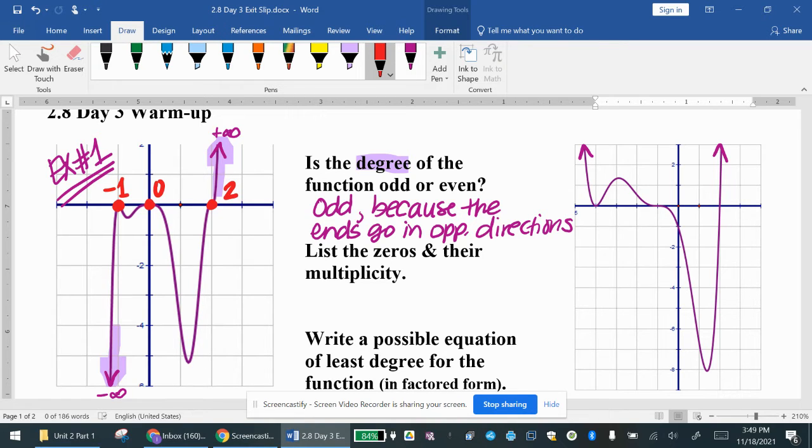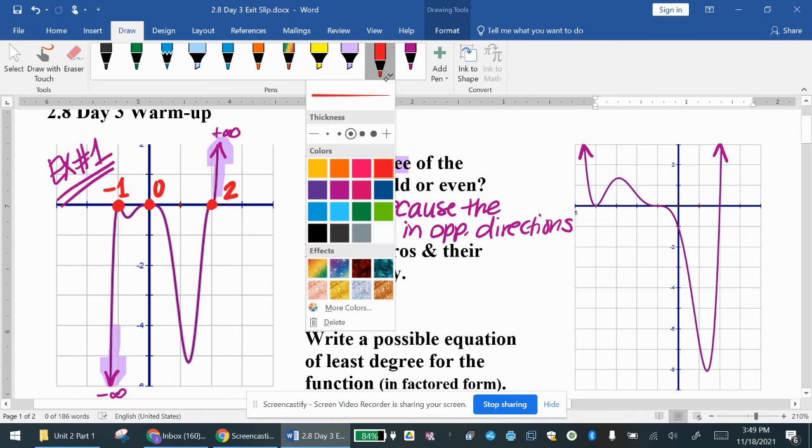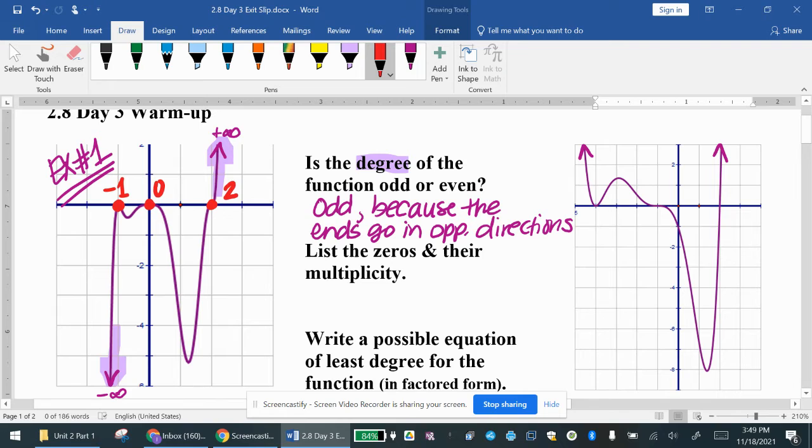So if your function touches the x-axis, you have to look at it in even more detail. Does the function just touch the x-axis at that zero, or does it pass through that zero? If we look at this zero of negative one, the function just touches it. It's coming up from the bottom, it hits negative one, it bounces off. When it just touches that zero, then that multiplicity is even. So the zero of negative one, the multiplicity is even.